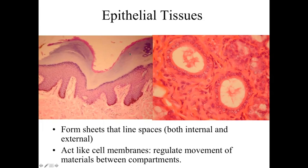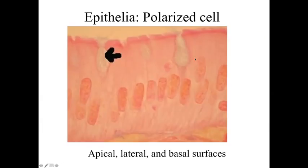It may be something like the skin, which blocks the passage of materials, or in a duct system it may be involved with modifying and pumping things across the epithelial lining. When we have an epithelia, we have a polarized cell — a distinct region at one end that is different from the other end. With an epithelia, we're going to have a basement membrane in light microscopy, or a basal lamina in electron microscopy, which forms the base or foundation of the epithelia. Below that we have connective tissue.